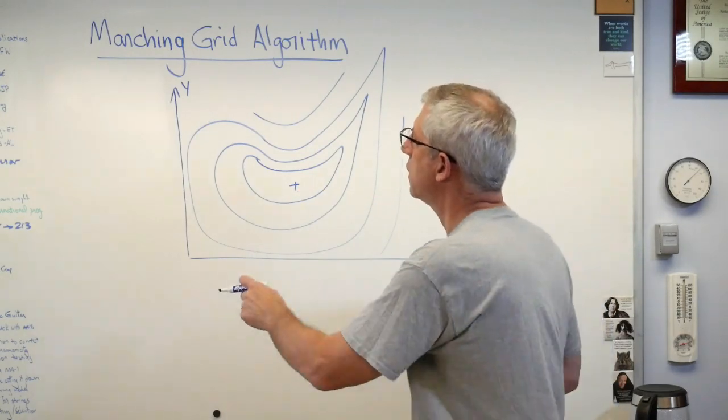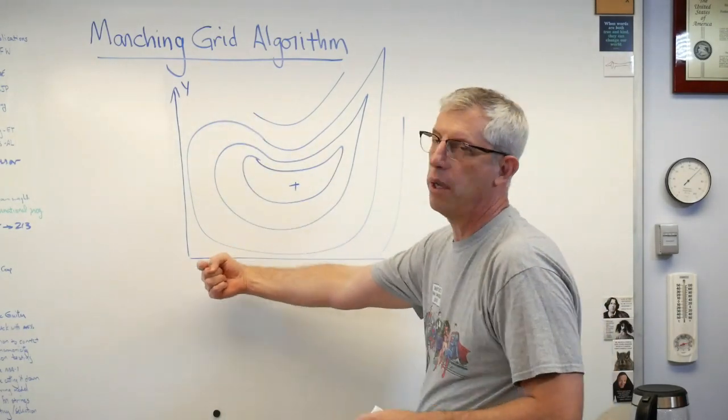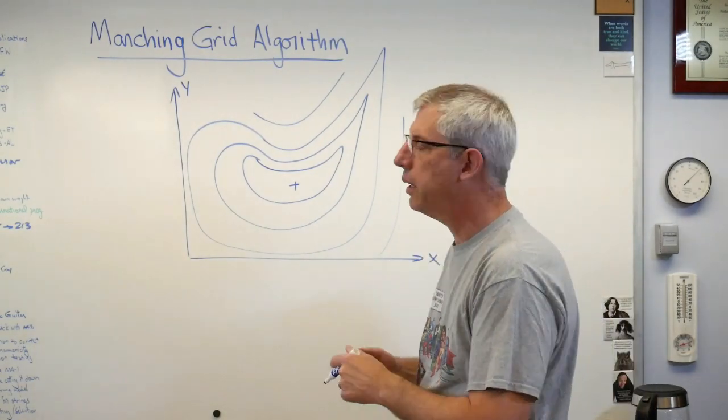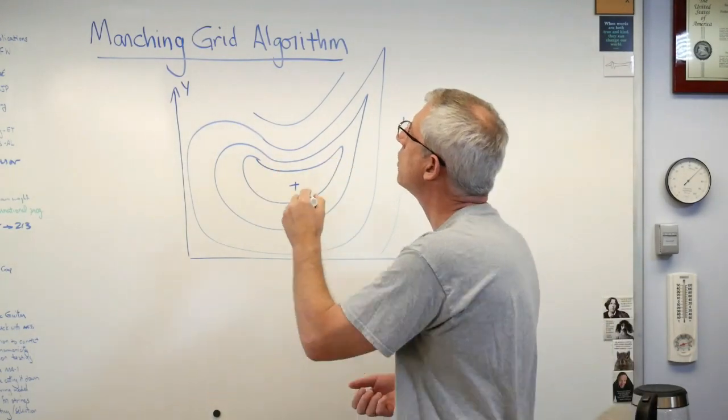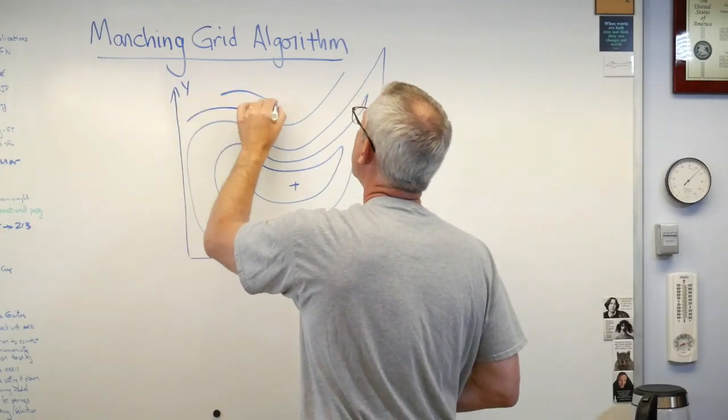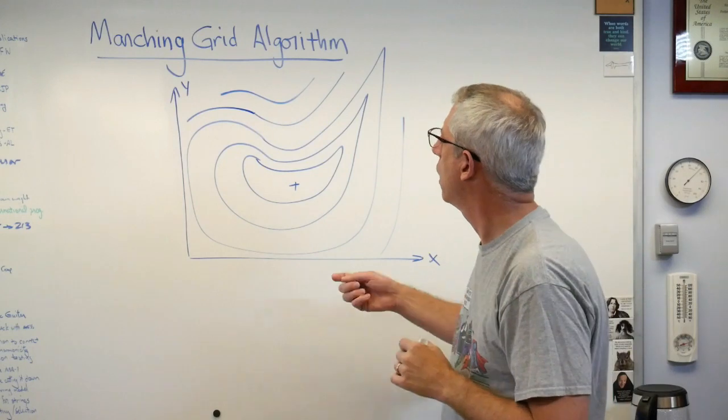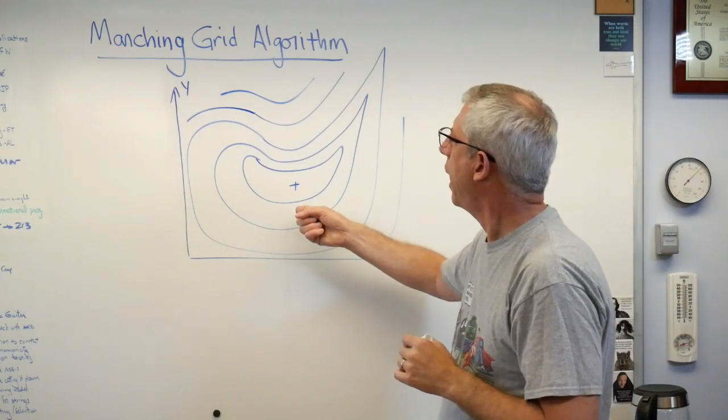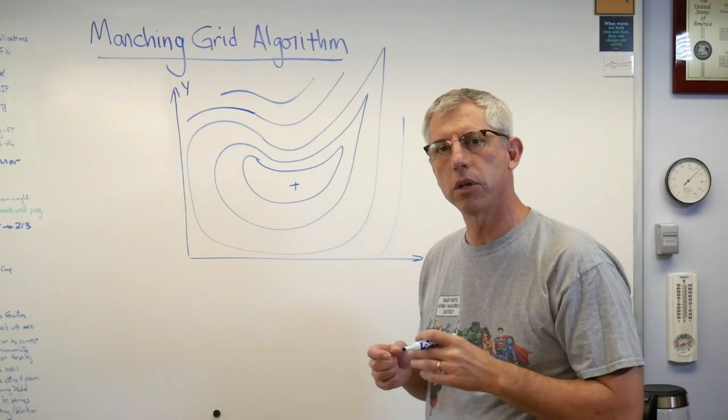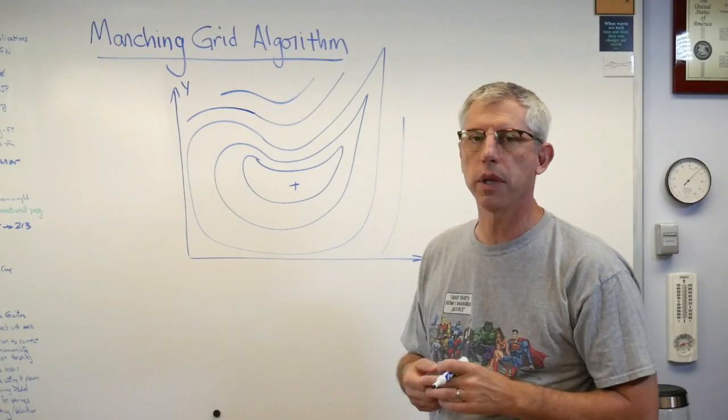Now, design space is these two dimensions. The third dimension is the value of the objective function. Then representing it on this 2D board with a contour line - it's kind of like a topographical map if you're a hiker. So I have this objective function. Here's design space. I want to march through design space in some hopefully intelligent way.